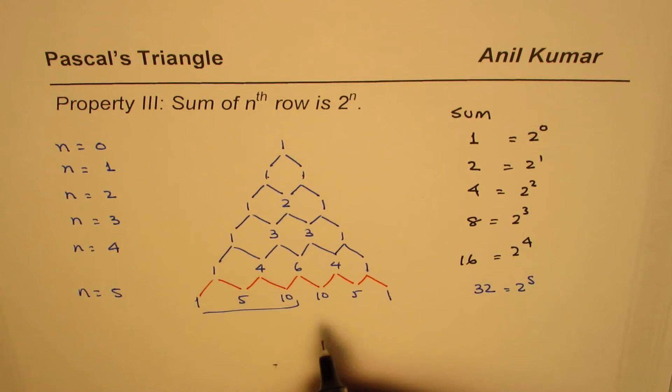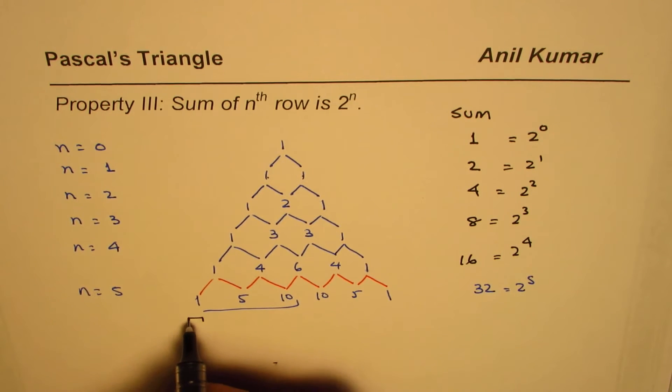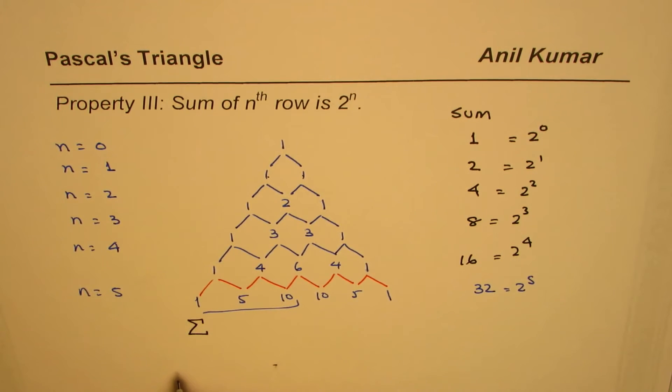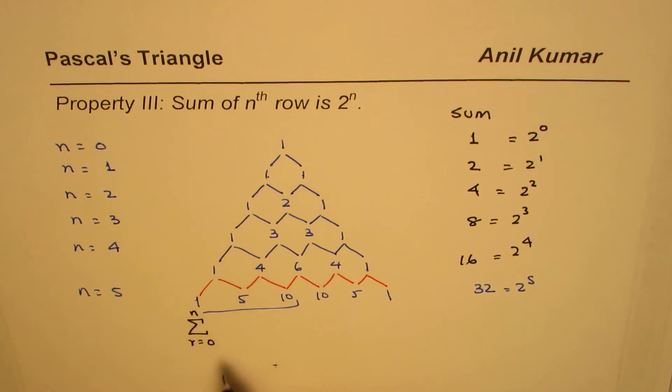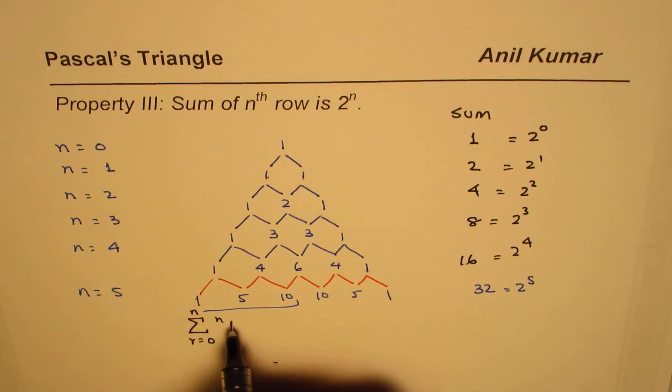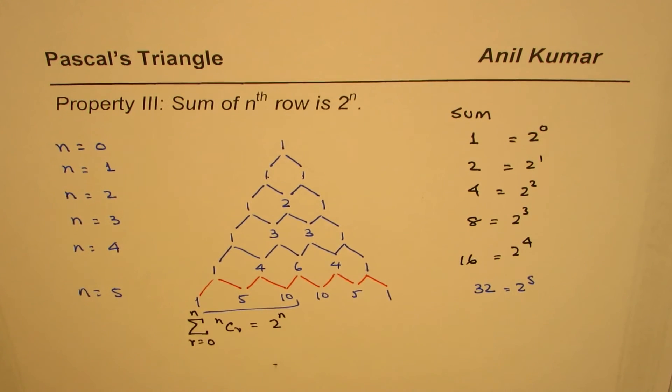In general, we can write these as binomial coefficients, and we can say sum as the sigma notation, where r is equal to from 0 to n. There will be n plus 1 terms. nCr. Sum of all these coefficients is equal to 2 to the power of n.